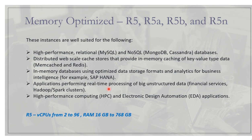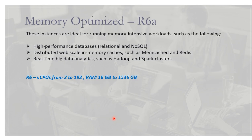Looking at the R series — R5, R5a, R5b, R5n — these are very good for high performance relational databases, MySQL, NoSQL, MongoDB, and Cassandra databases. They also support real-time processing and come with 2 to 96 virtual CPUs and RAM ranging from 16 GB to 768 GB. Moving to R6, you will see a difference in virtual CPUs and RAM.